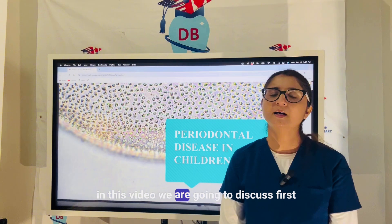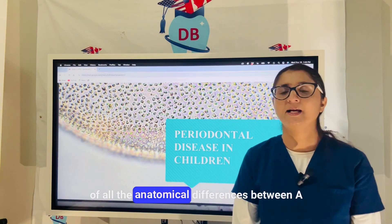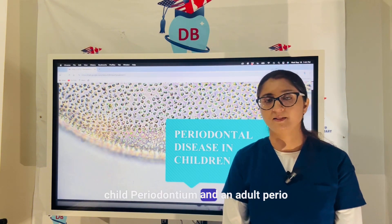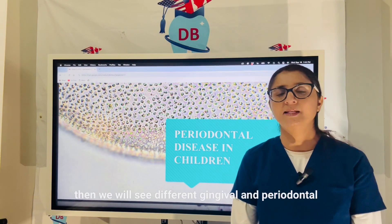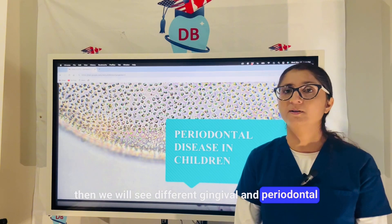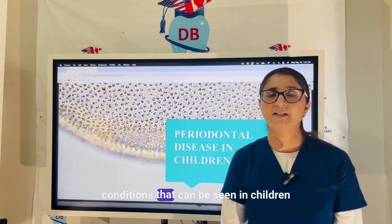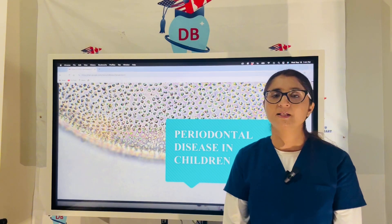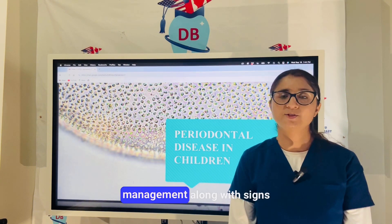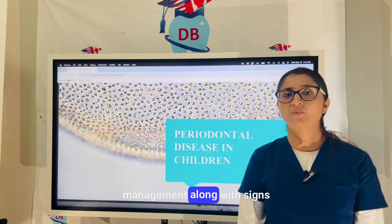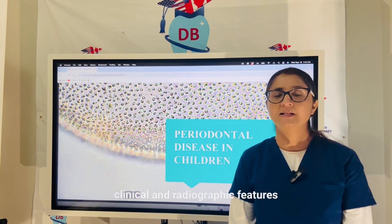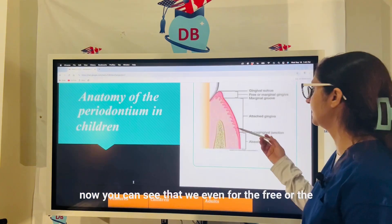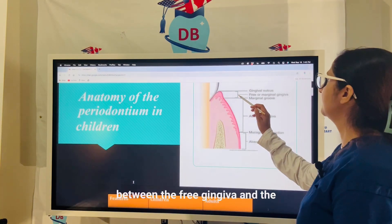In this video we are going to discuss first the anatomical differences between a child periodontium and an adult periodontium, then different gingival and periodontal conditions that can be seen in children — the etiology, incidence, management, along with signs, symptoms, clinical and radiographic features.